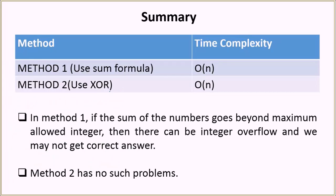In this tutorial, we basically discussed two methods. Both of those methods did the job in order of n. So which one is better? Actually, method 2 is better. Why? Because in method 1, the sum could go beyond the maximum allowed integer in case the array is very big. Then there can be an integer overflow problem and thus we may not get the correct answer. But method 2 is free from any such problems and it will definitely give you the correct answer each and every time.